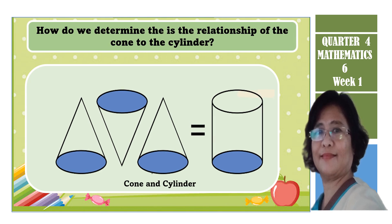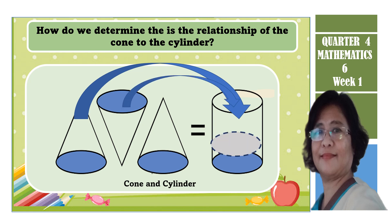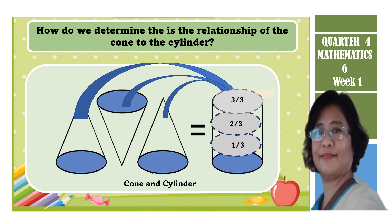The first cone fills one-third of the cylinder. The second cone fills in another one-third, making it two-thirds full. And the third cone makes the cylinder completely full. It turns out that it takes three cones full of liquid to fill the cylinder. Therefore, the relationship of the cone to the volume of the cylinder is that the cone is just one-third of the volume of the cylinder.